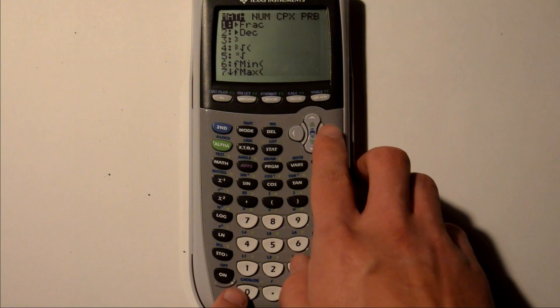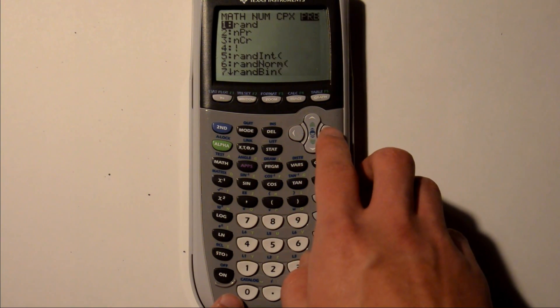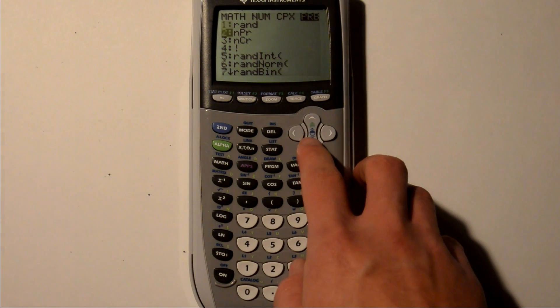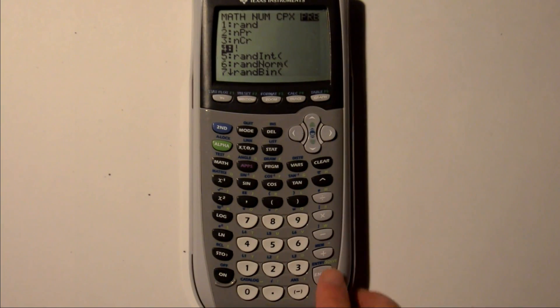Scroll over 3 times to PRB, which stands for probability, and scroll down 3 times to option 4, which should look like an exclamation point. Then hit enter, and there you go.